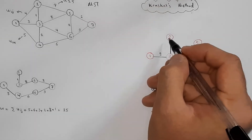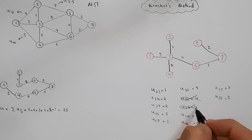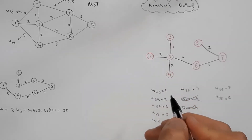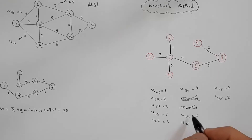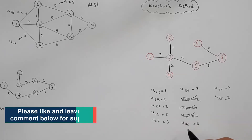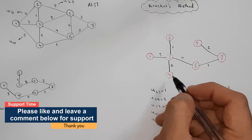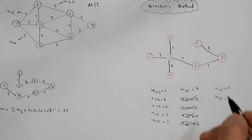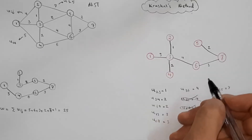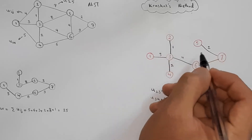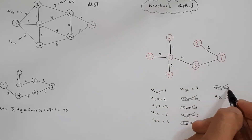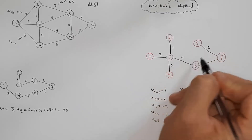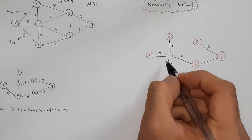The next line, between 1 and 2, is also not allowed because it would create a loop. Then between 1 and 4 — not allowed, creates a loop. Then between 4 and 6 — not allowed, creates a loop. Then between 2 and 5 — not allowed, creates a loop. Then between 3 and 5 — again not allowed because it would create a loop.